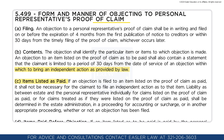Items listed as paid: If an objection is filed to an item listed on the proof of claim as paid, it shall not be necessary for the claimant to file an independent action as to that item. Liability as between the estate and the personal representative individually for claims listed on the proof of claim as paid, or for claims treated as if they were listed on the proof of claim as paid, shall be determined in the estate administration in a proceeding for accounting or surcharge, or in any other appropriate proceeding, whether or not an objection has been filed.